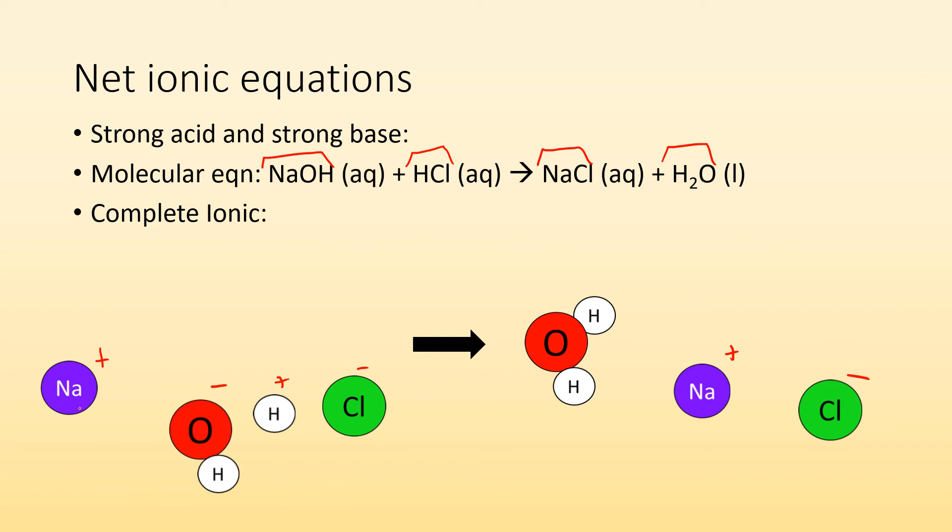So when we have a complete ionic equation, we're looking at all of the ions. So let's rewrite it. It's really going to be this: Na+ plus OH- plus H+ plus Cl- gives me H2O plus Na+ plus Cl-. So it's going to look like this. That's our complete ionic equation. It's got all the ions there.